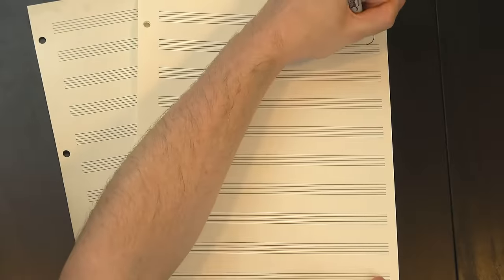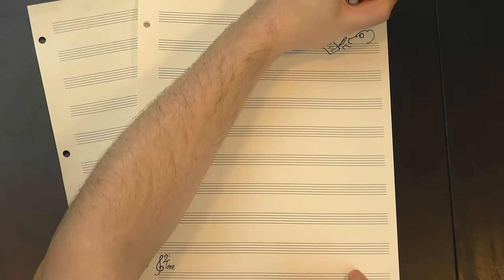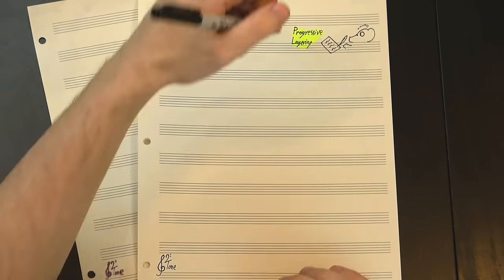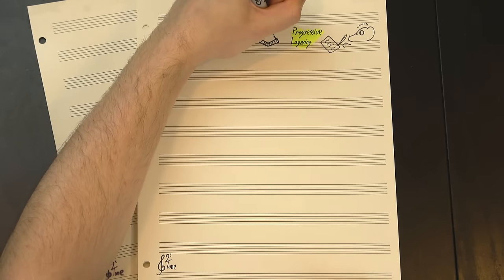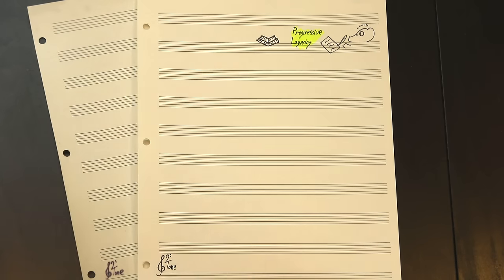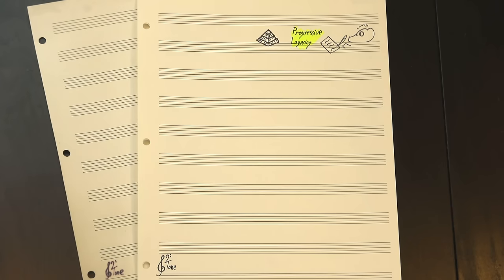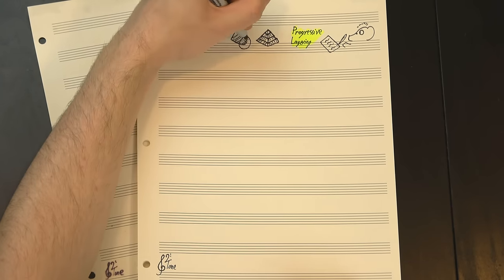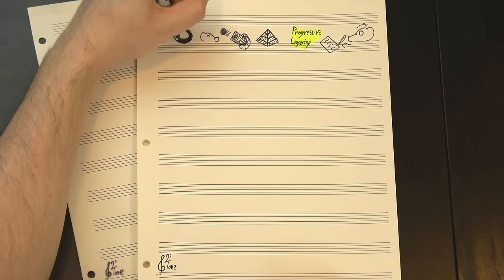This intro also features an arranging trick that we'll see all over this song, and honestly, all over Tull's work in general: progressive layering. The section starts with just the electric guitar and some drums. After a couple bars, the vocals come in, accompanied by the bass and an acoustic guitar. Then, on the third time through the progression, we're joined by a piano and a second electric guitar. Building up the orchestra like this helps lift the momentum of the section, and it keeps it interesting even though we're still playing the same thing.